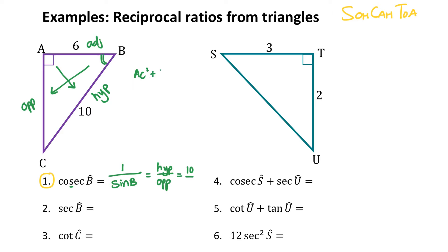AC squared plus 6 squared equals 10 squared, by Pythagoras. Working this out, I get 8 units. So it's 10 out of 8, which simplifies to 5 out of 4.